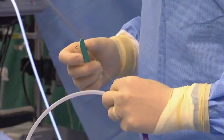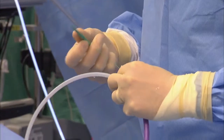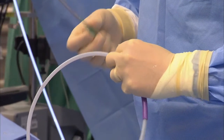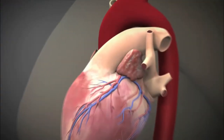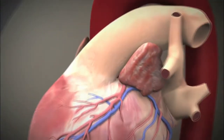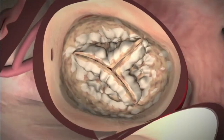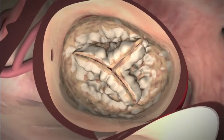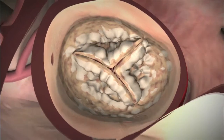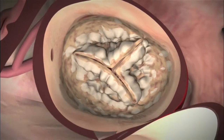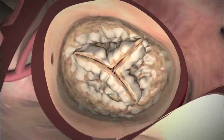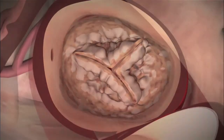The transcatheter aortic valve replacement procedure is performed on patients with severe aortic valve stenosis, which occurs when the aortic valve in your heart functions poorly, usually due to calcification. Here you see a valve that is not opening well because it is severely calcified, restricting the leaflet motion that supports healthy blood flow.